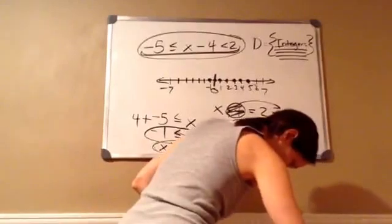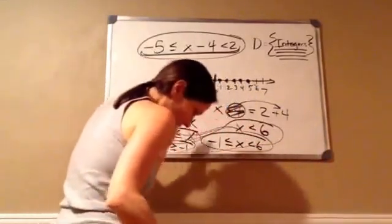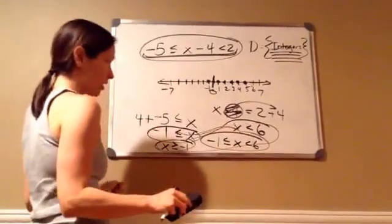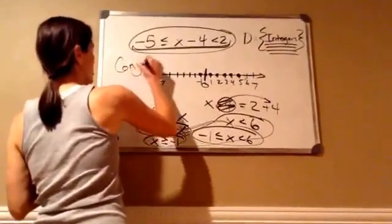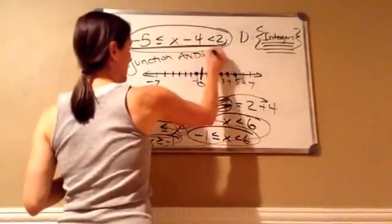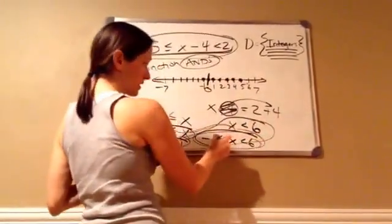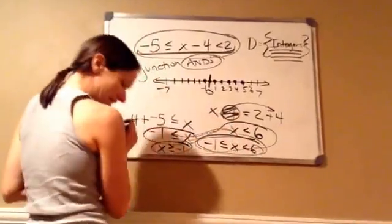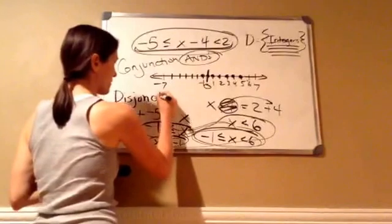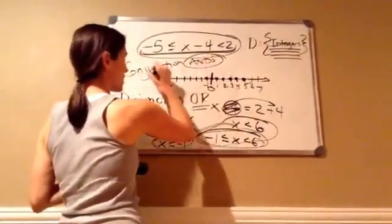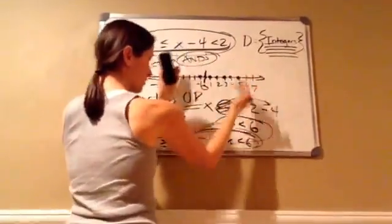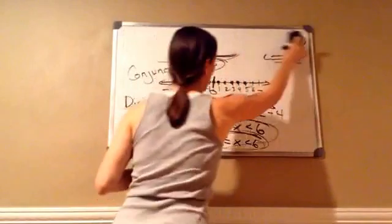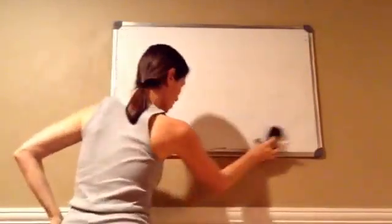Let's do a few more. One more thing: this is called a conjunction. Disjunctions are ones that use 'or.' Conjunctions are 'ands,' meaning they have to be inclusive — it has to include this AND this, not or. You have to match both of them. But disjunctions, which we'll learn about next, are 'or' — you do one or the other. So let's do a disjunction.